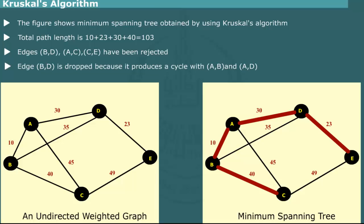The edge BD, for example, is dropped because it produces a cycle with edges AB and AD which are already selected to be the part of spanning tree.